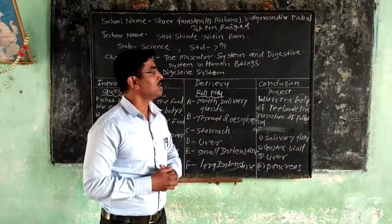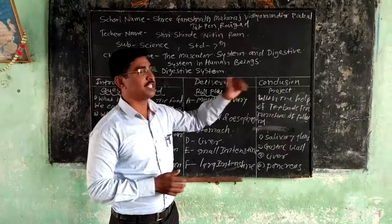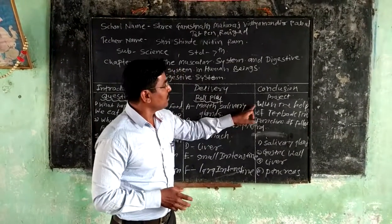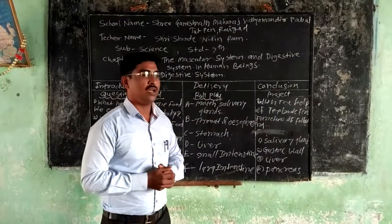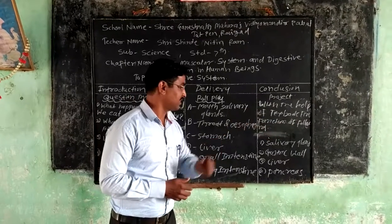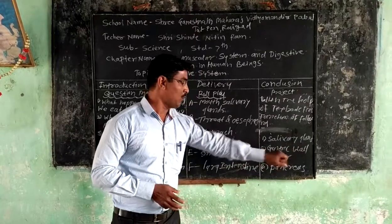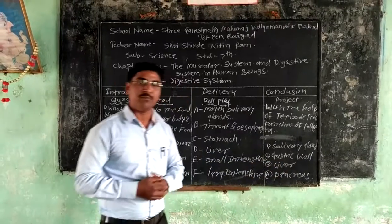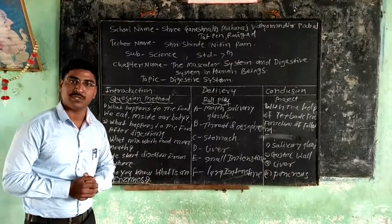Then I am going to the conclusion. In conclusion, I am using a project method. I am giving a project to the students: with the help of the textbook, find the function and secretion of the glands from the following — salivary glands, gastric walls, liver, and pancreas. In this way, I am teaching this topic, Digestive System.